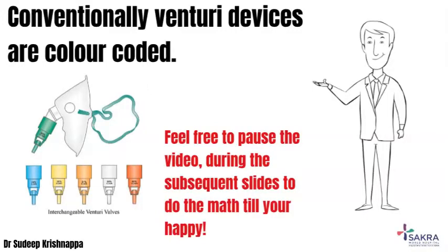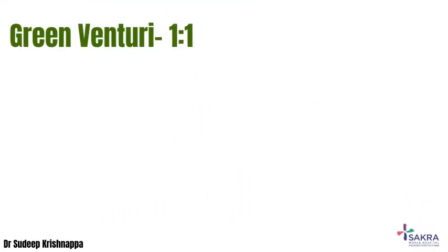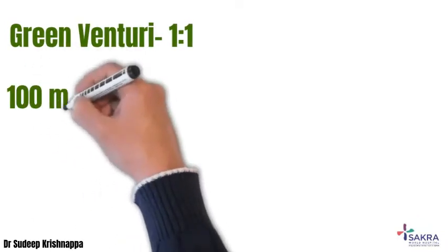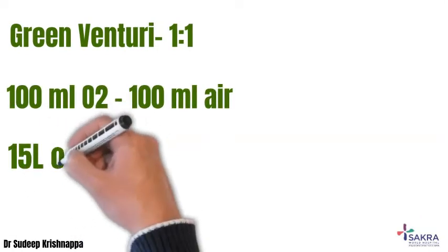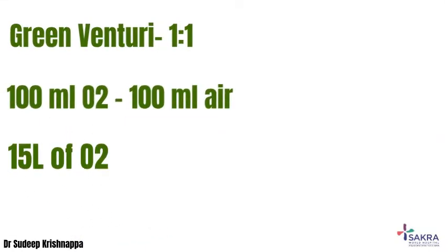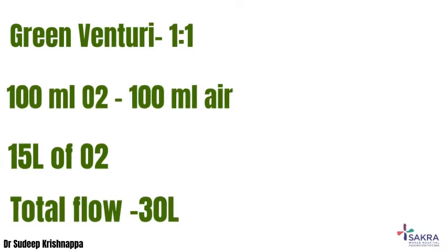We start with the green venturi, which has an entrainment ratio of 1:1. That means for each 100 ml of oxygen flowing through the device, another 100 ml of room air would be entrained. With the recommended flow rate of 15 liters of oxygen for the green venturi, 15 liters of room air would also be entrained, generating a total flow of 30 liters.